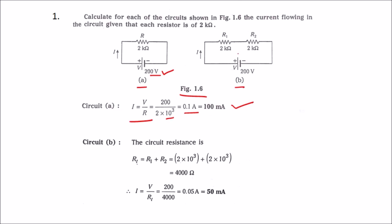In the second circuit, we have two resistors connected in series: 2 kilo ohms plus 2 kilo ohms. For series resistors, we add the resistance values. 2000 ohms plus 2000 ohms equals 4000 ohms. Using I = V/R, that is 200 divided by 4000, the current is 0.05 amps, which can be written as 50 milliamps.